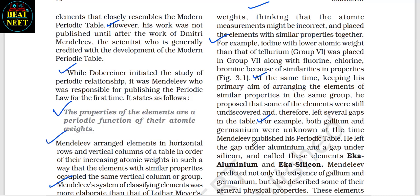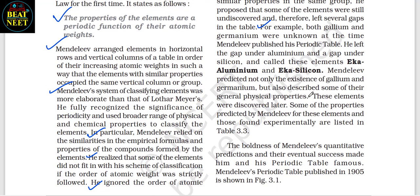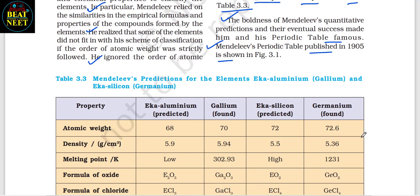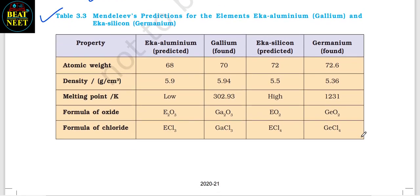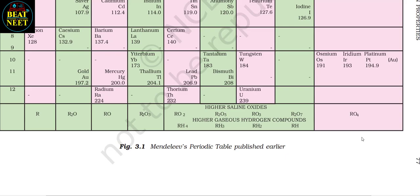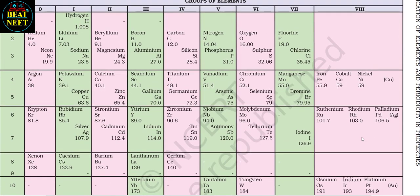Mendeleev predicted not only the existence of gallium and germanium but also described some of their general physical properties. These elements were discovered later, and their experimentally found properties matched his predictions closely, as listed in Table 3.3. The boldness of Mendeleev's quantitative predictions and their eventual success made him and his periodic table famous. Mendeleev's periodic table, published in 1905, is shown in Figure 3.1.